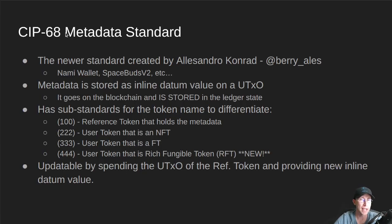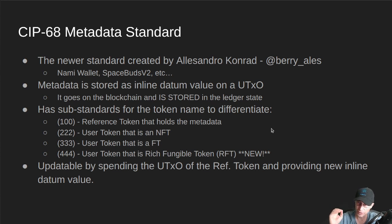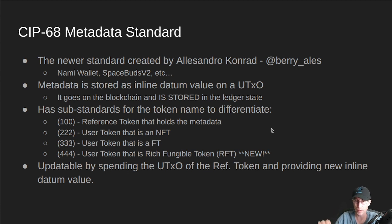Now let's talk about CIP68. CIP68 is a newer standard, also created by Alessandro. It was created around the same time he was working on SpaceBuds V2 and the wormhole system, so it needed to be smart contract enabled. The metadata is stored as an inline datum value on a UTXO — instead of storing it as transaction metadata, it gets stored on an actual UTXO, tacked onto the end of it. As such, it is stored in the current ledger state, so on every node on Cardano, if you have one of these tokens, all of this data about that token is sitting in the memory of that node — live and active.